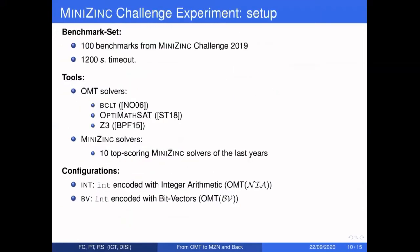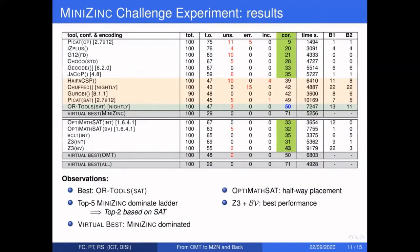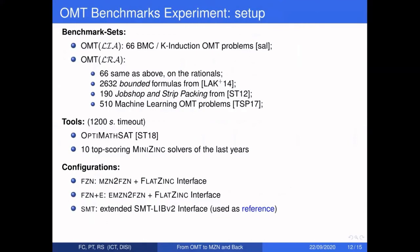For experimental results: the first experiment uses benchmarks from the MiniZinc Challenge with the 10 top-scoring MiniZinc solvers and three OMT solvers. The best results were obtained by MiniZinc solvers. Two of the top-five MiniZinc solvers use a SAT approach. The best OMT solver was Z3, and OptiMathSAT obtained a halfway placement.